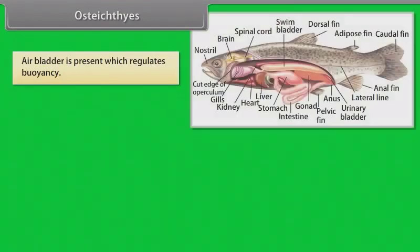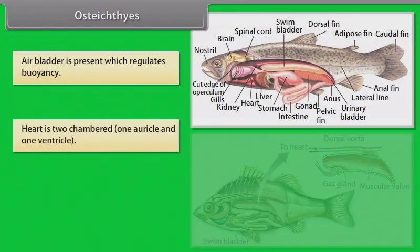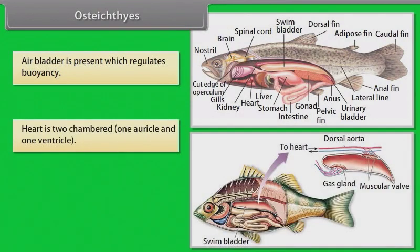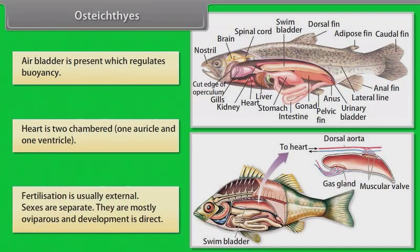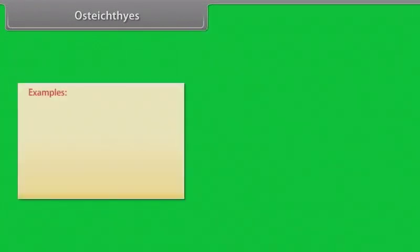Air bladder is present, which regulates buoyancy. Heart is two-chambered: one auricle and one ventricle. Fertilization is usually external. Sexes are separate. They are mostly oviparous and development is direct.